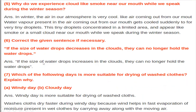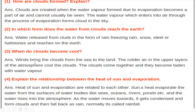When do clouds become cool? Winds bring the clouds from the sea to the land. From the sea, water evaporates and clouds form there, but it rains on the lands. The colder air in the upper layer of the atmosphere cools the clouds. Because of the heat, evaporation took place, but after cloud formation, the coolness of the upper atmosphere makes those water droplets cool. The clouds come together and become laden — that is, heavy — with water vapour.